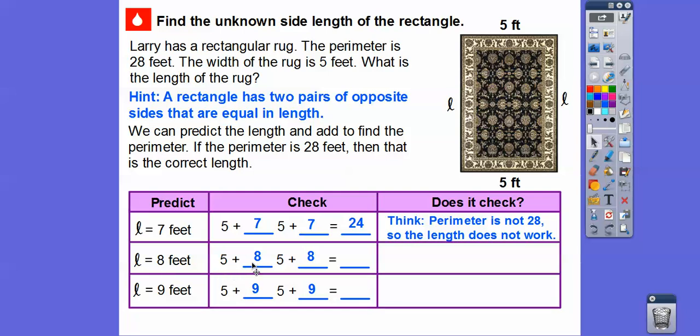So 5 plus 8 is 13. We'll add another 13 together because we've got another 5 plus 8. So that's 26. Well, that's not going to work either. Let's try 9. 5 plus 9 is 14. 14 plus another 14 is going to get us 28. So that's our magic number right there. So the length is going to be 9 feet right there.